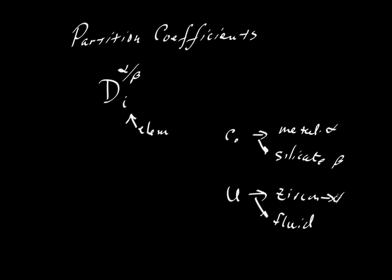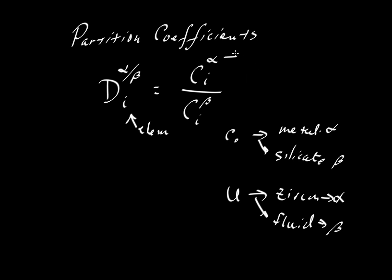For this example, alpha and beta represent our two phases. It is usually the mineral phase that forms the numerator of this ratio, and a fluid or liquid that goes on the bottom — though we can mix and match. The convention is to have the mineral concentration in the numerator: the concentration of element I in alpha divided by the concentration of I in beta, where alpha is a mineral phase.